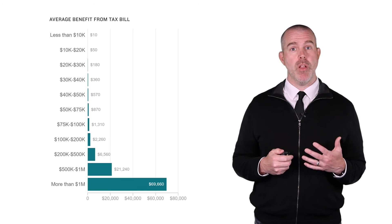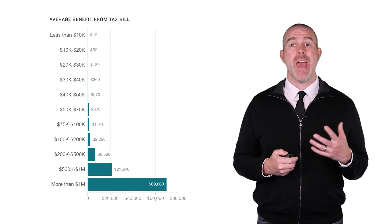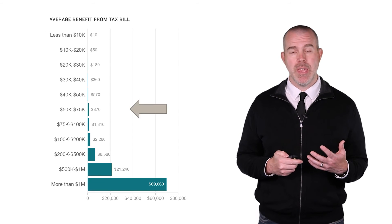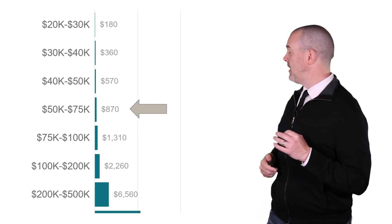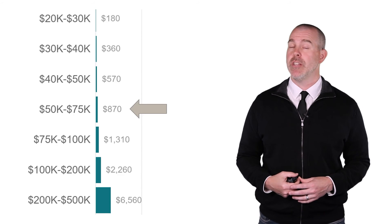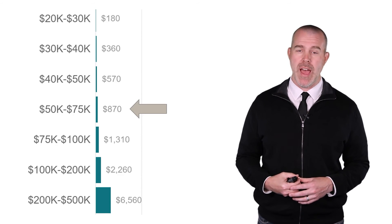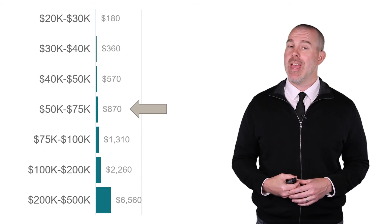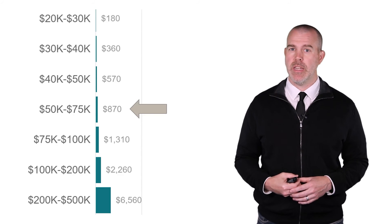If we come back to this table from the Tax Policy Center, we had about $65,000. That would be here. So if we zoom in there, we can see that the median income, or sorry, the median tax break would be about $870 only. Certainly not $4,000 from the press secretary, and not the $1,600 that the report said either.